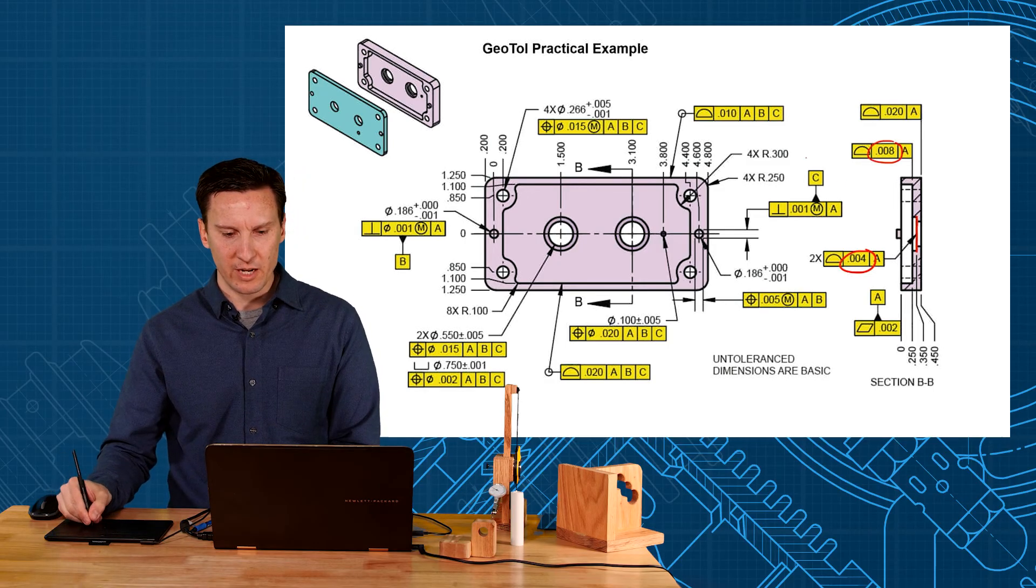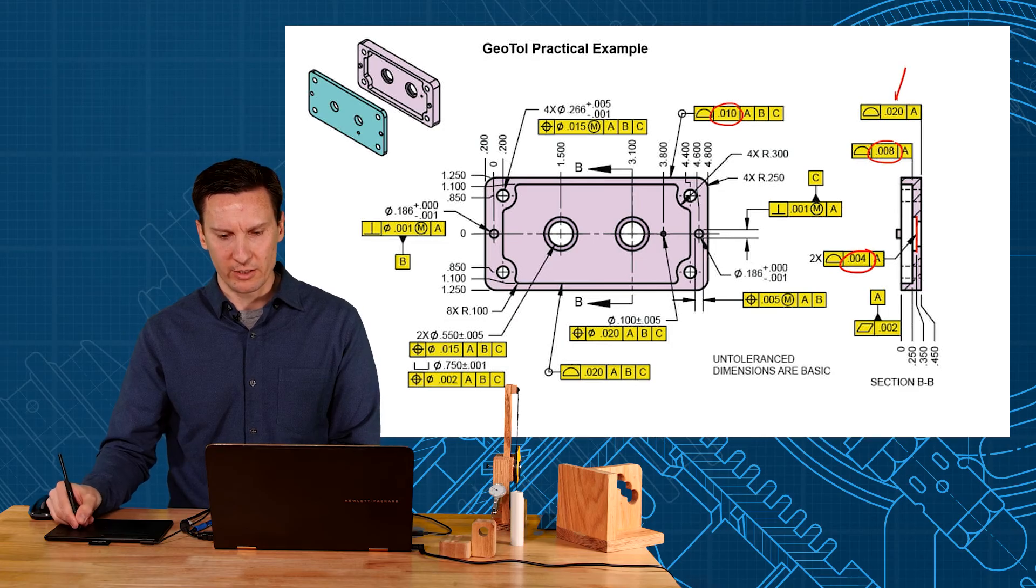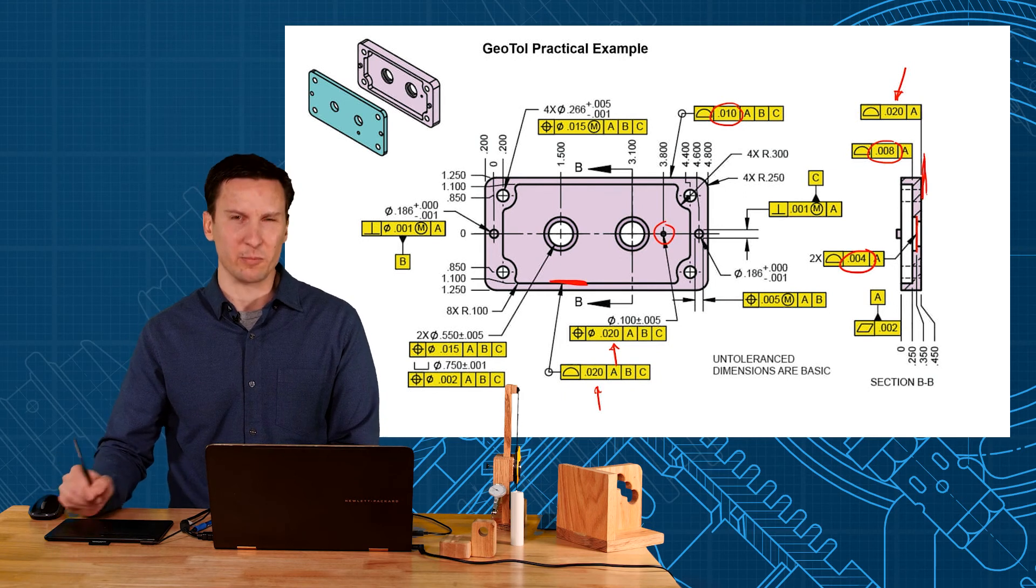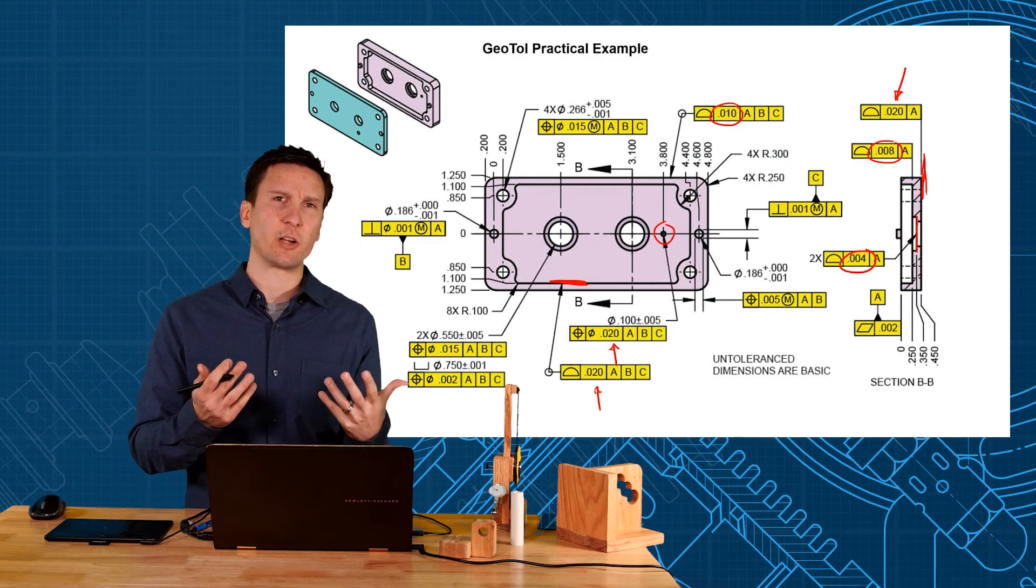Then you've got medium tolerances at 8 and 10. And then really loose tolerances like 20 here and 20 here and 20 here. So obviously this hole doesn't matter. This inside edge doesn't matter. And this back face doesn't matter.